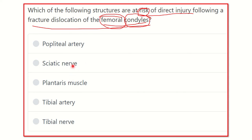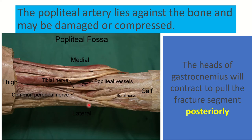In the popliteal fossa near the femoral condyle, we can see different structures. The femoral condyle lies on the two sides of the femur. We can identify the tibial nerve and common peroneal nerve, and we know these arise from the sciatic nerve, which lies more superior. So the sciatic nerve is not present in the popliteal fossa and is not close to the femoral condyle.